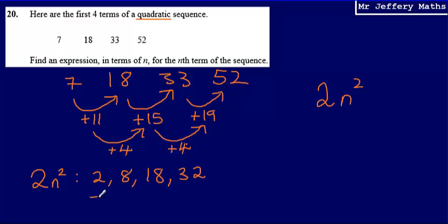But it looks as I'm going to have to make some other changes as well. So, the first term is 7, 18, 33, and 52. And what I'm looking for here is, well, what am I going to have to do to 2n² to get to the numbers in my sequence?